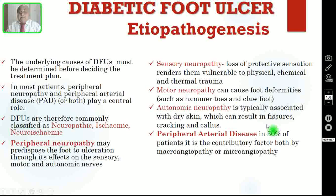Motor neuropathy can cause foot deformities such as hammer toes and claw foot. Autonomic neuropathy is typically associated with dry skin, which can result in fissures, cracking as well as callus. Peripheral arterial disease will be the cause for the diabetic foot ulcer in 50% of these patients, due to both macroangiopathy and microangiopathy.